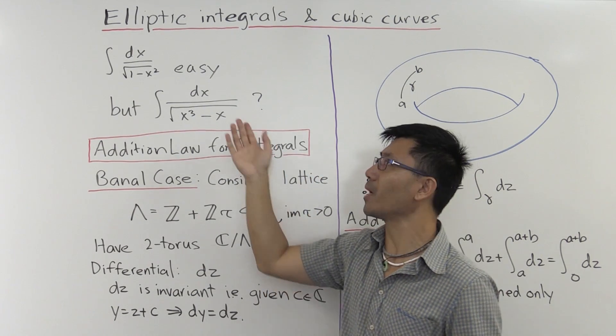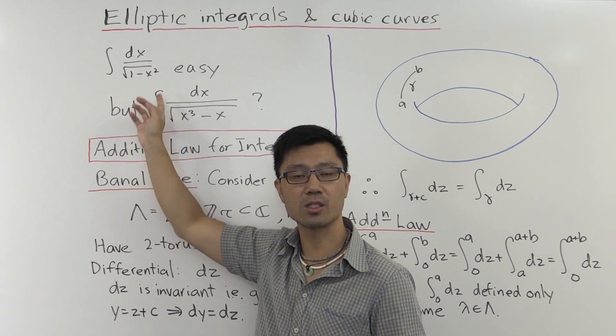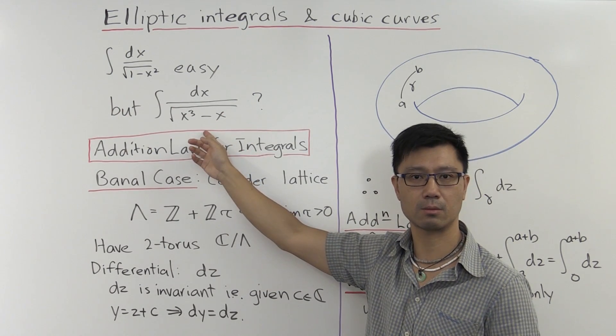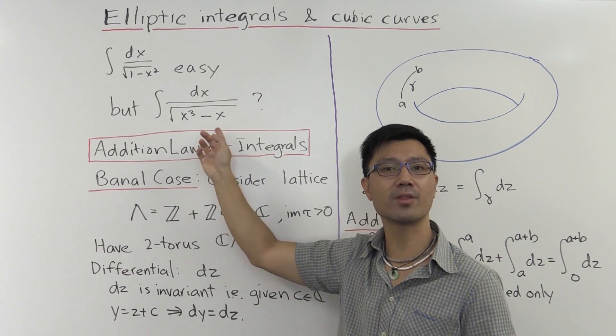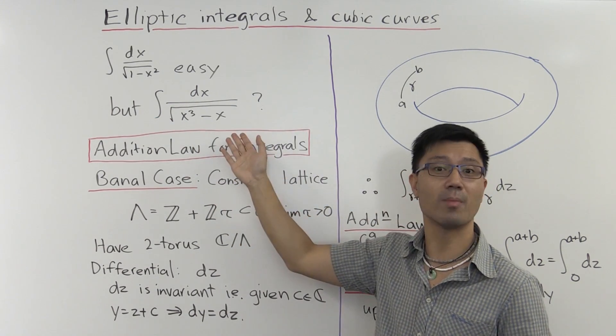Now we can make this a little bit more complicated by instead of having a quadratic term in the square root, replacing it with a cubic term like this. And then also ask, well what about this integral here? Well it turns out that this is much harder.